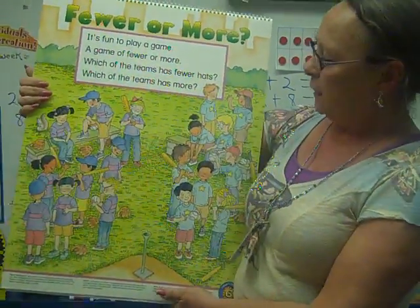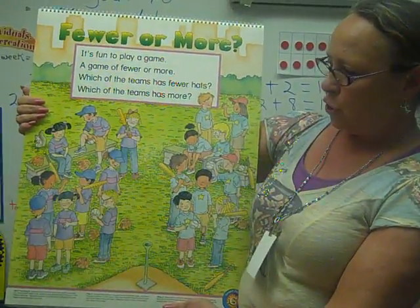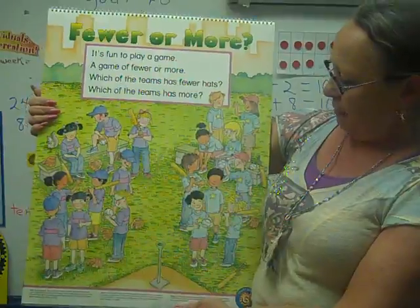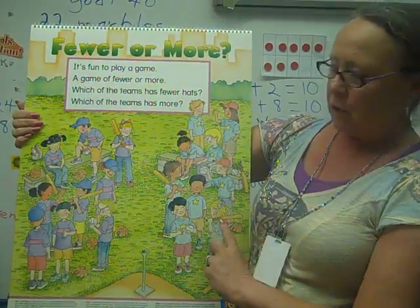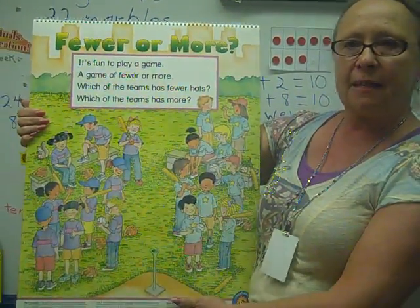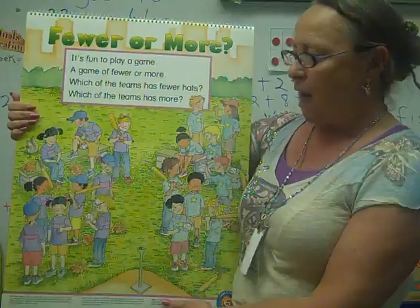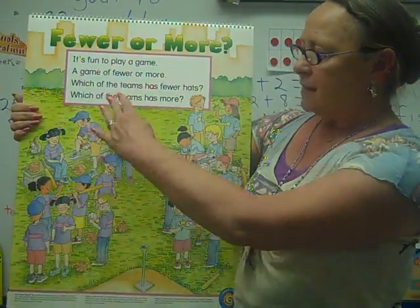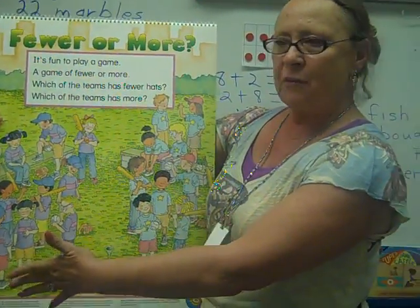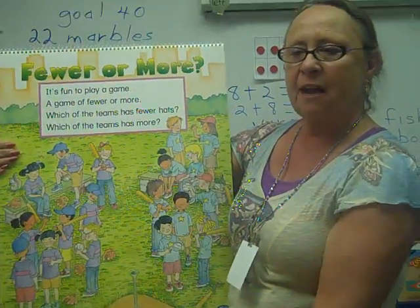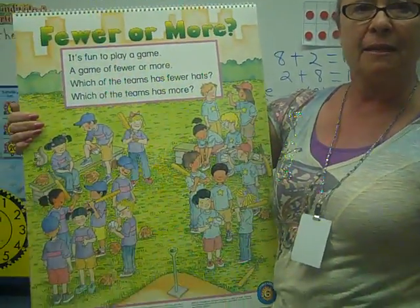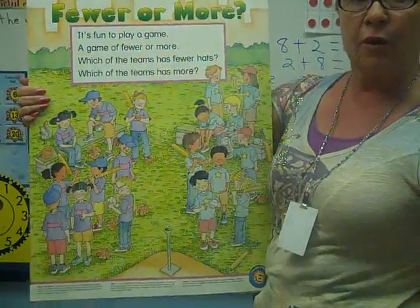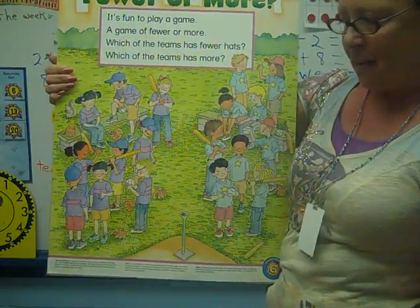We looked at the picture and I said to them, how many children are on this side? They said nine. I said, how many are on this side? They said nine. And I said, how can you make an addition story with that?